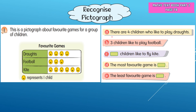From this pictograph we can make statements and conclusions. For example: there are four children who like to play draughts, and three children like to play football. How many children like to fly a kite? Count: one, two, three, four, five, six — six children like to fly a kite. The most favorite game is kite and the least favorite game is football.